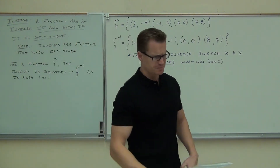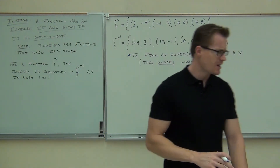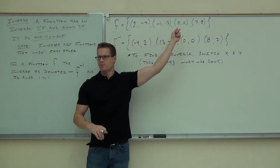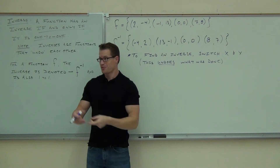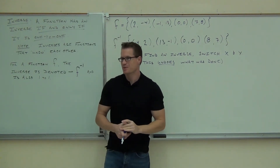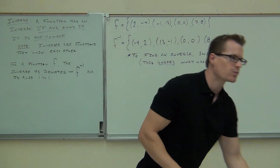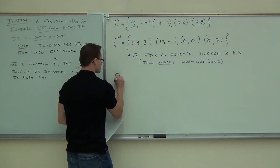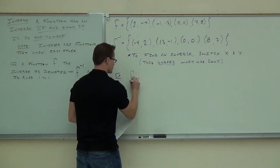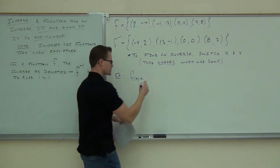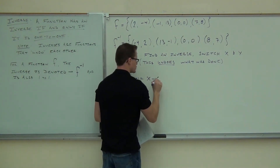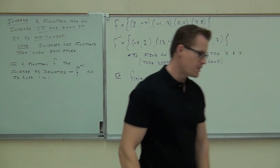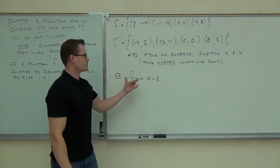Now, the problem is we normally don't see functions like this, do we? We don't just see four points and do something with that function. How we normally see functions is something like F of X equals some sort of an equation. That's typically how we see functions. Is there a way we can find the inverse for this?